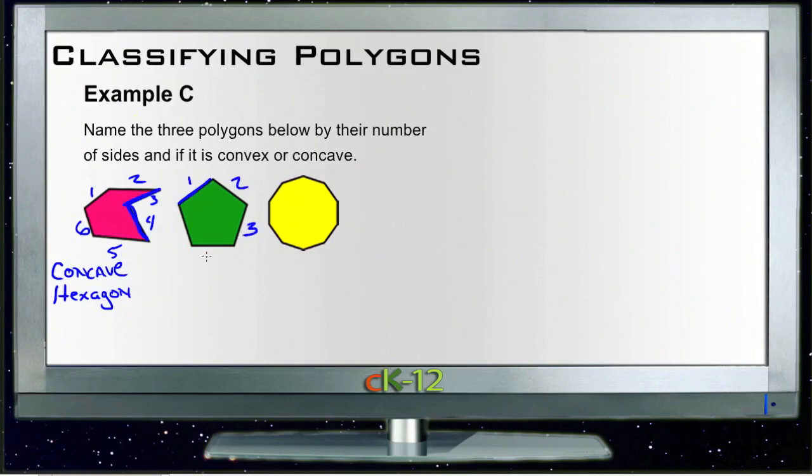So one, two, three, four, five sides, and they all bend outward. So this one is a convex pentagon.